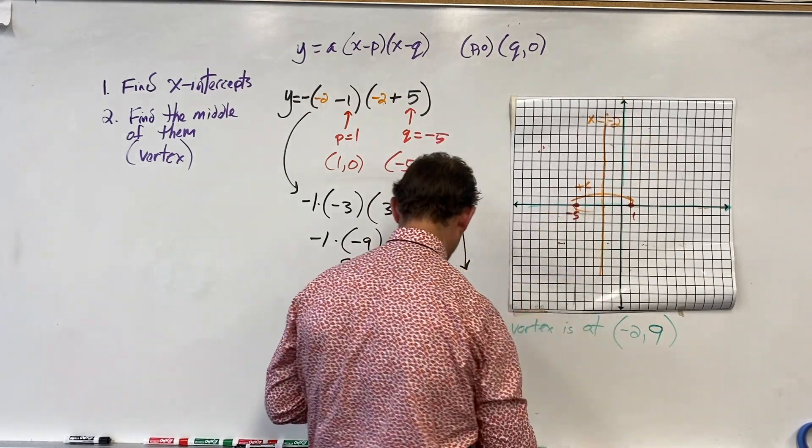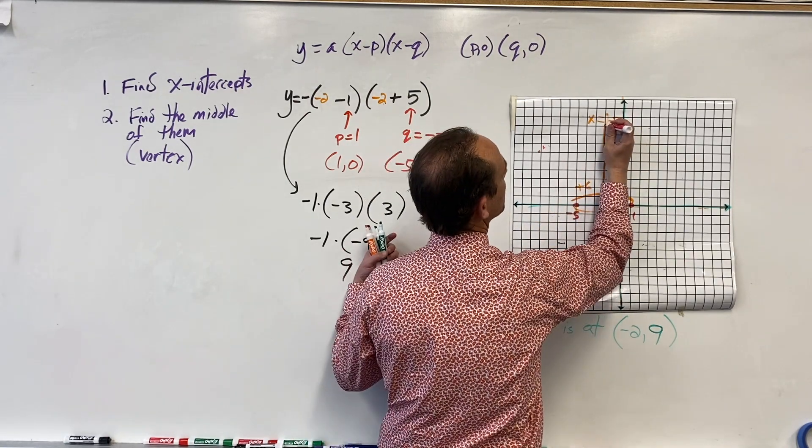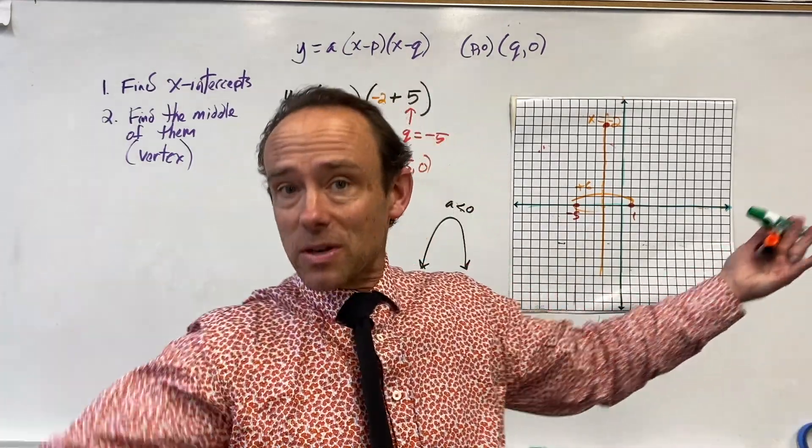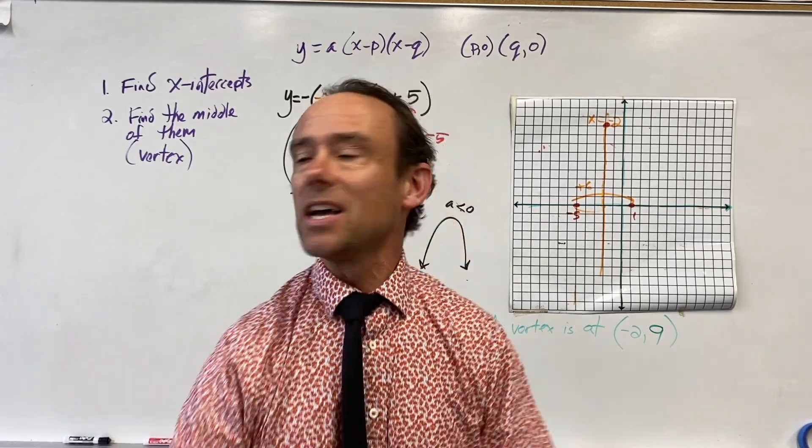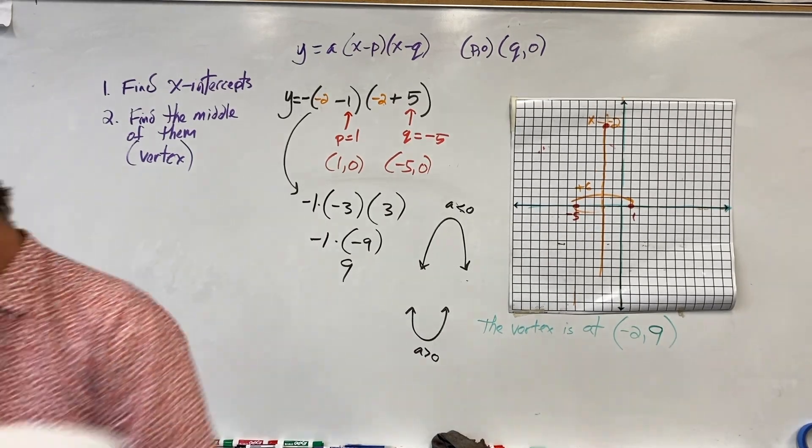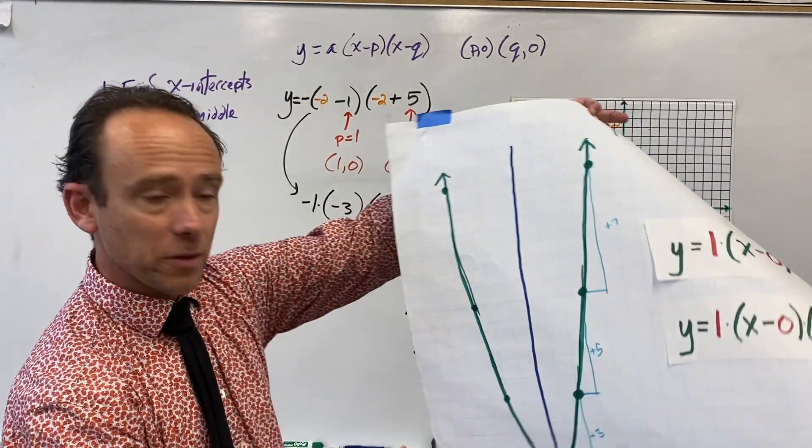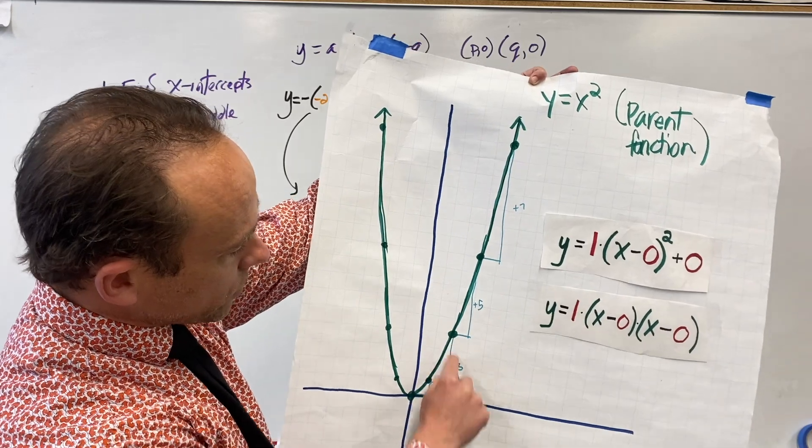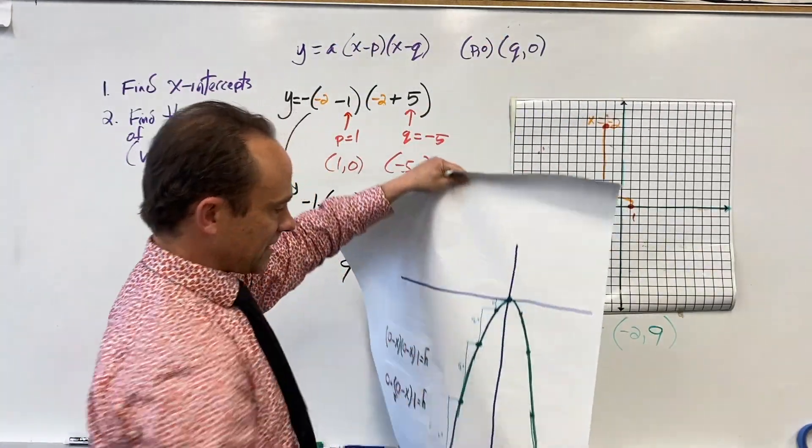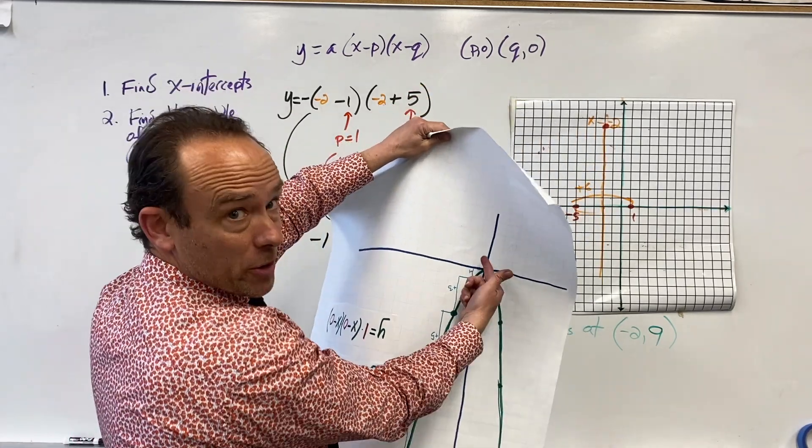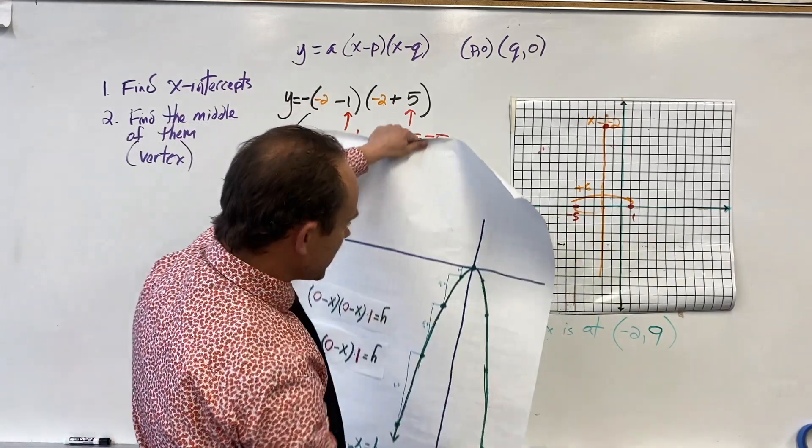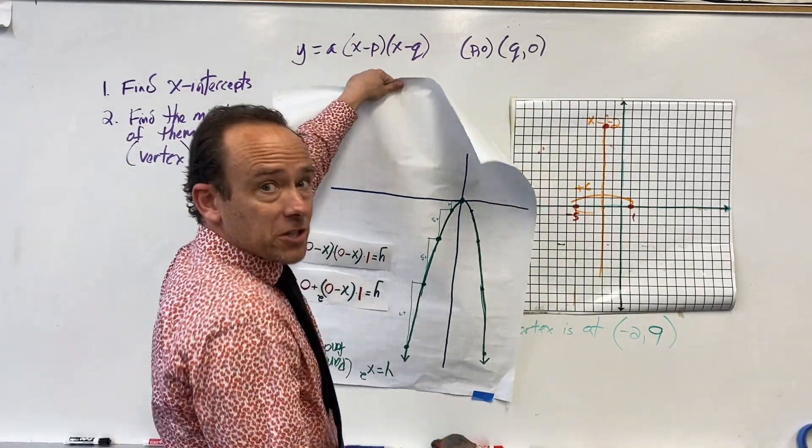Our vertex is at (-2, 9). Let's add some more points. Let's use the fact that this pattern for the parent function—over 1 up 1, over 1 up 3, over 1 up 5—works even if it's pointed down, except instead of going up 1 you go down 1. With a being -1 we've got a perfect parent function just pointed down.